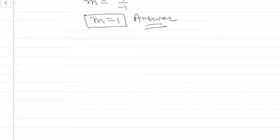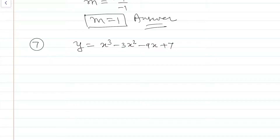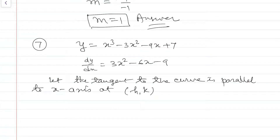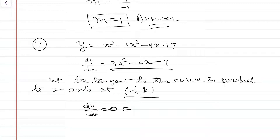Question number 7: Find the point at which the tangent to the curve is parallel to the x-axis. If a tangent is parallel to the x-axis, its slope is 0. Finding the first derivative: dy/dx = 3x² - 6x - 9. Let the tangent be parallel to the x-axis at (h, k). Setting dy/dx = 0 gives 3h² - 6h - 9 = 0.